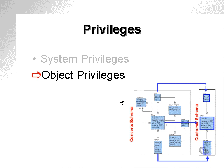Object privileges. An object privilege is different to a system privilege in that it allows access to objects between different users. So where a system privilege allows a user to create a database object, an object privilege allows access to an object which is already created in the database. For instance, as you can see from the diagram, the concert schema and another schema called the customer schema. The customer is allowed access to three tables in the concert schema: the act table, the show table, and the venue table.